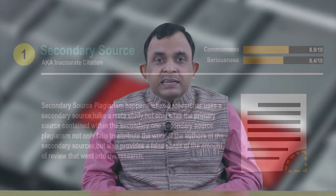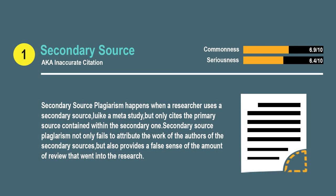Another software that checks plagiarism is Authenticate, which discusses 10 types of plagiarism. One is secondary source plagiarism — this happens when a researcher uses a secondary source like metadata but only cites the primary source. The data has been taken from a secondary source; for example, someone is discussing the census report 2011, but the data is from a secondary source.